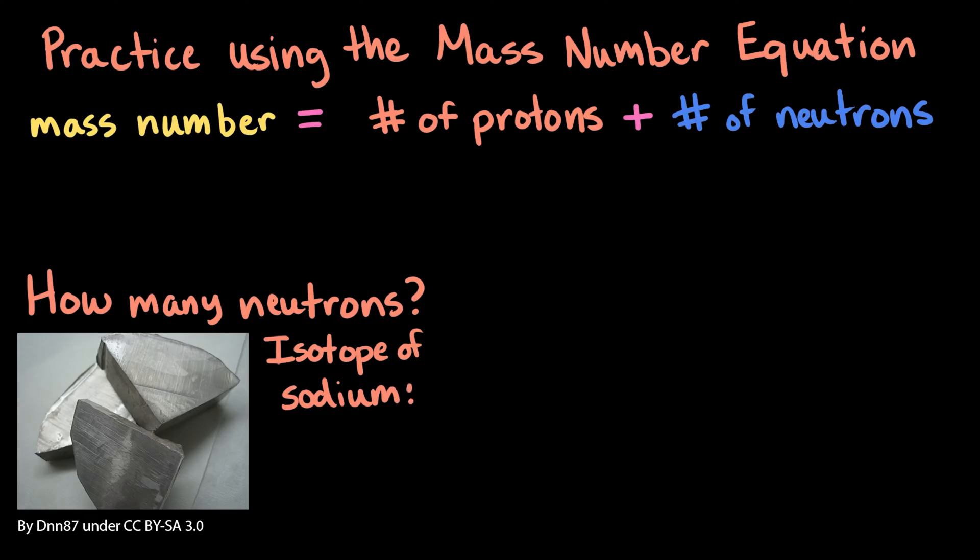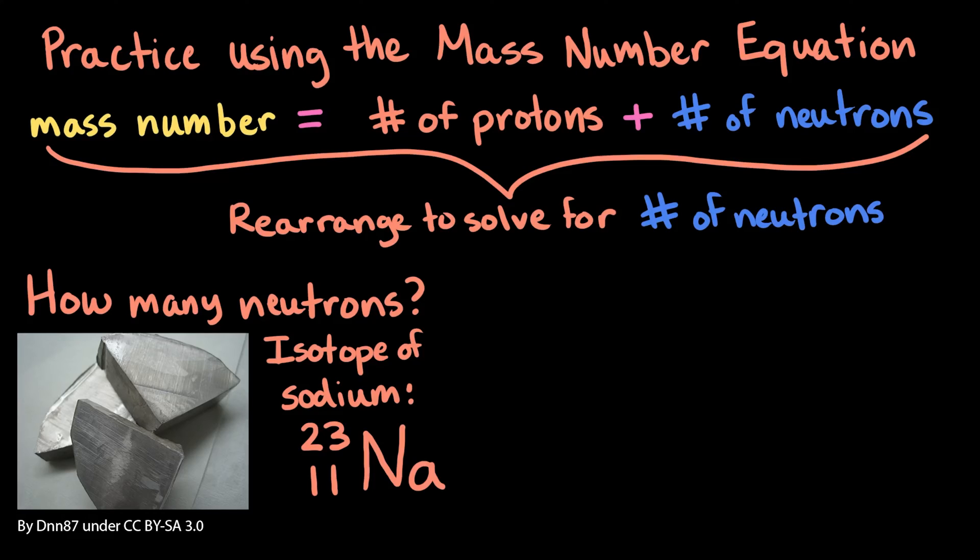How many neutrons are in an isotope of sodium with the following notation? To answer this question, we'll first need to rearrange our mass number equation to solve for the number of neutrons. Pause the video and take a moment to try this for yourself.